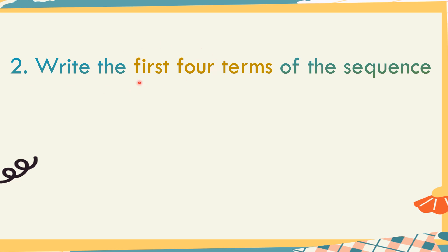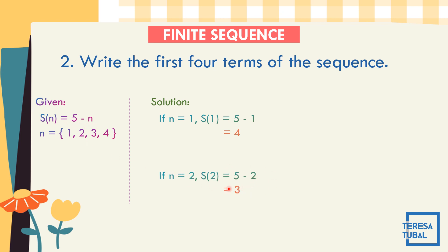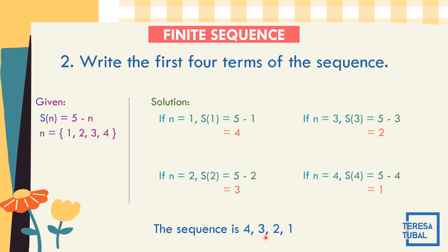How about number 2? The first four terms of the sequence s of n is equal to 5 minus n. Replace n by 1: s(1) = 5 minus 1 = 4. Replace n by 2: s(2) = 5 minus 2 = 3. Replace n by 3: s(3) = 5 minus 3 = 2. Replace n by 4: s(4) = 5 minus 4 = 1. The first four terms are 4, 3, 2, and 1.